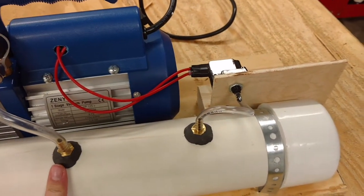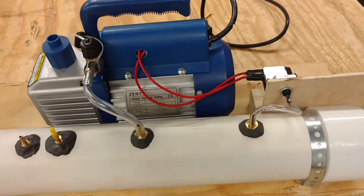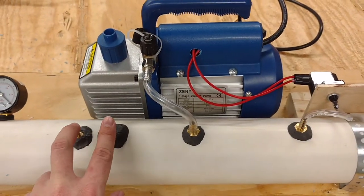And then the tubes just go right on there really clean. I've got two taps on it for bagging two things at once.